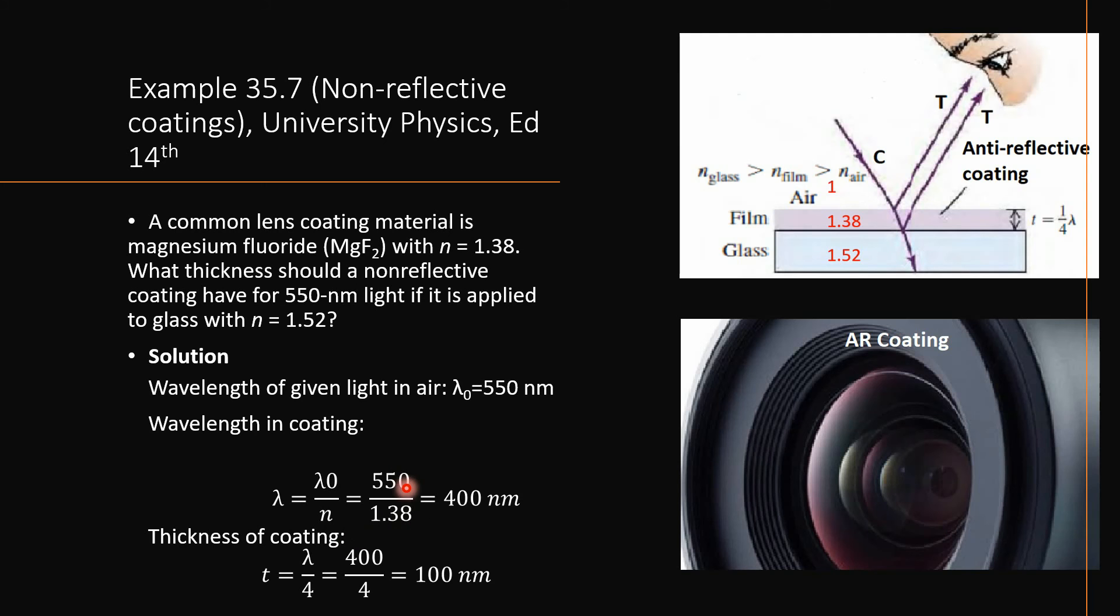So by dividing this value by this value we will get a value of 400 nanometers. Now using this formula by putting the value of lambda that was 400 nanometers and dividing it by 4, we will get an answer of 100 nanometers. This value indicates that magnesium fluoride layer is a thin film.